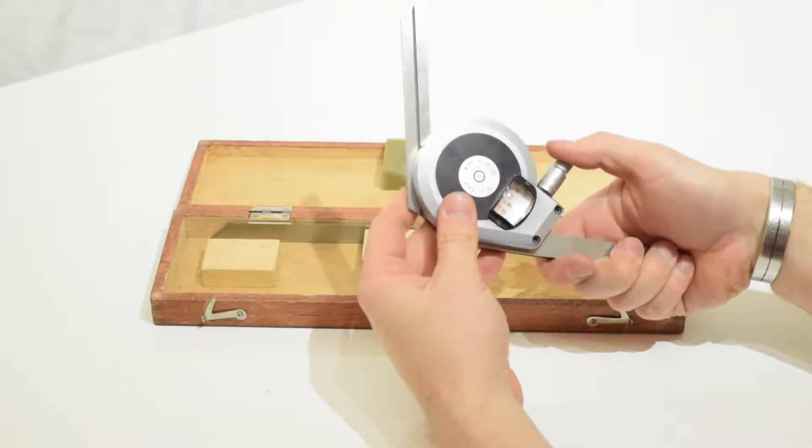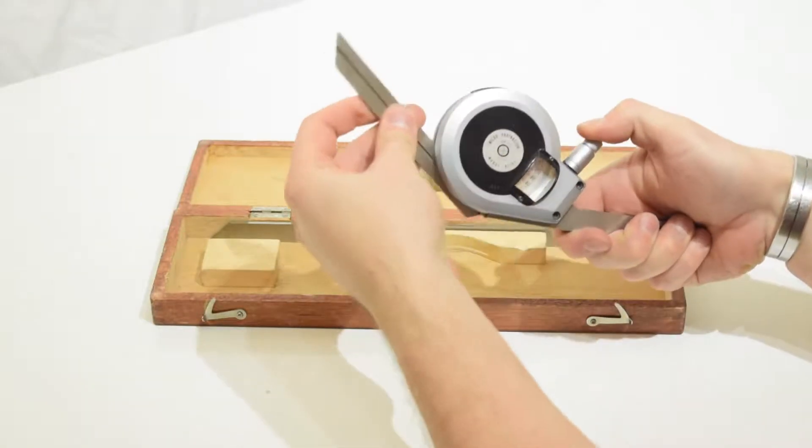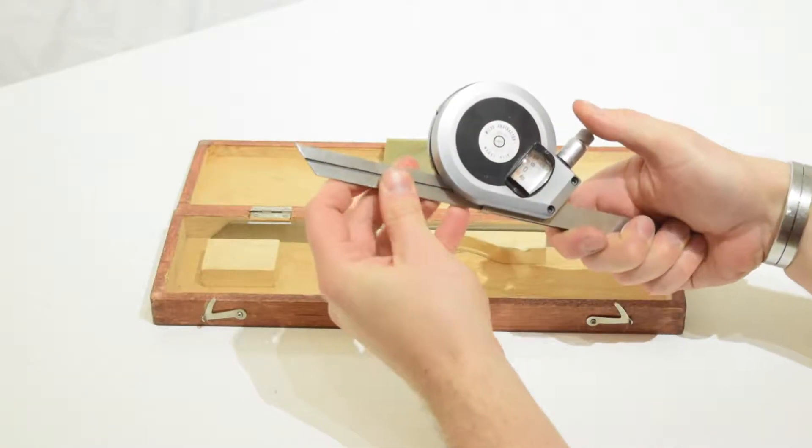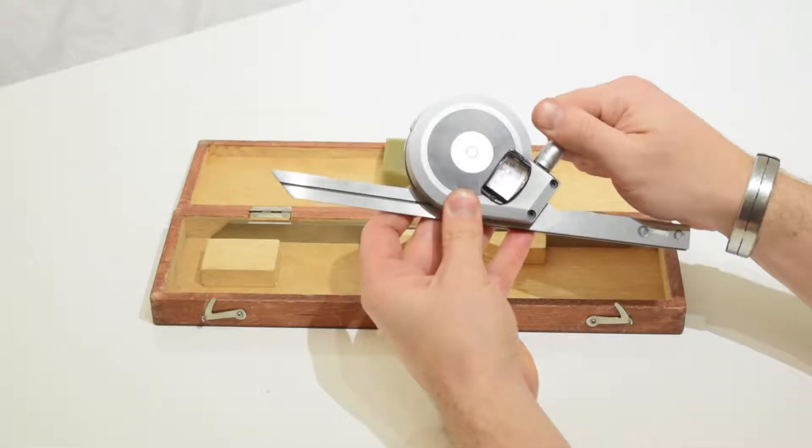The thimble is graduated to 60 divisions, meaning per each degree, you can split each degree into 1/60th. Extremely precise.